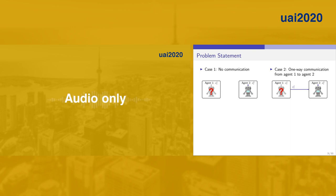We would like to study this problem under two different cases. In case 1, there is no communication between the agents. And in case 2, we assume that there is a one-way communication from agent 1 to agent 2. In both of these cases, each agent can observe its own state.